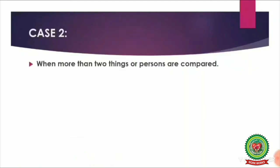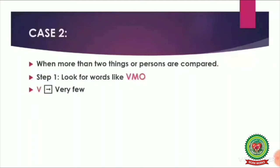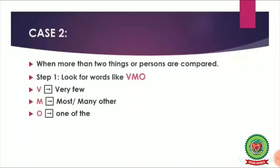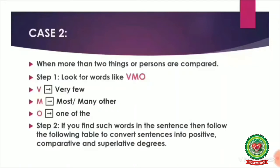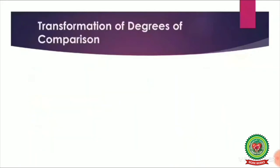Second case: when more than two things or persons are compared. We look for the words V, M, and O. V stands for 'very few', M stands for 'most/many other', and O stands for 'one of the'. If we have these three words in our sentence to be transformed, we follow this table.